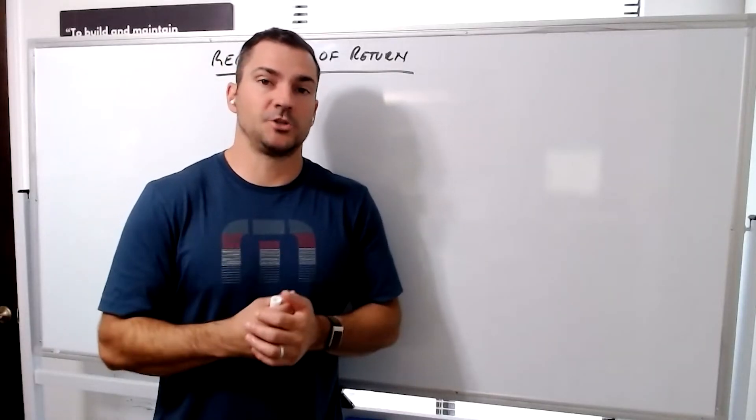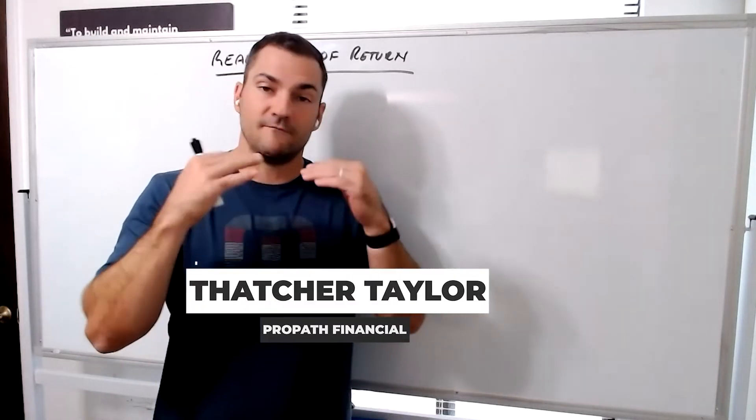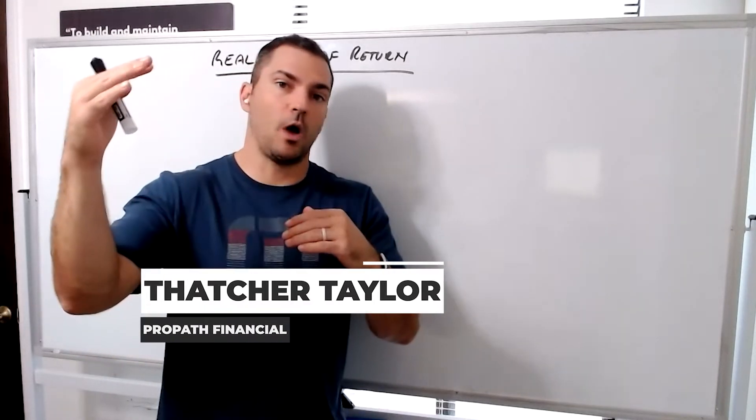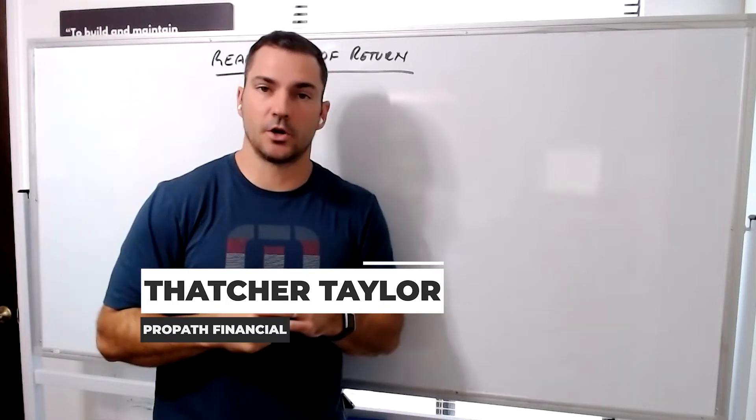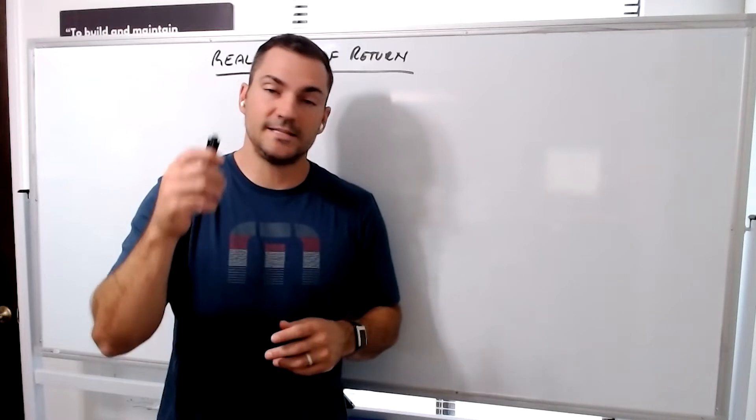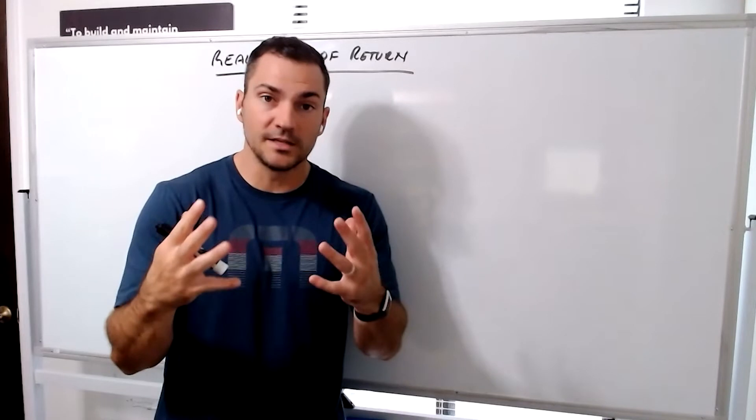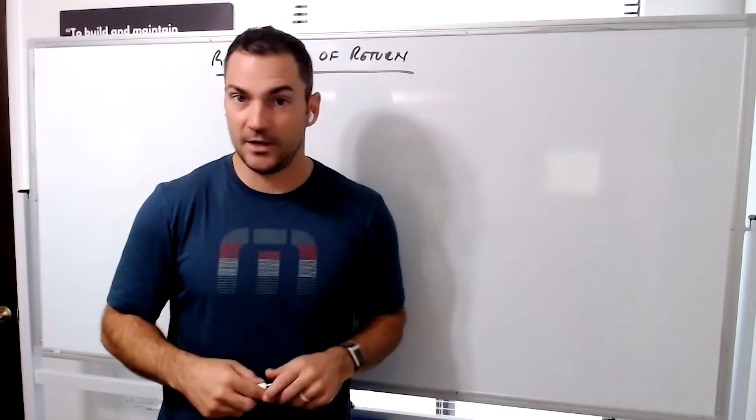That's Taylor ProPath Financial. We're going to talk about your real rate of return. People invest their dollars and they say they get 12 or 15 or 20% return, but they don't think about taxes and they don't think about inflation. You can actually calculate taxes and inflation into your return to come up with a realistic rate of return, and I'm going to show you how to do that now.